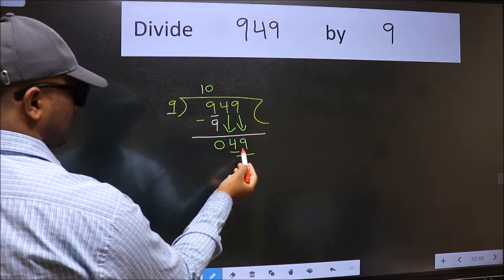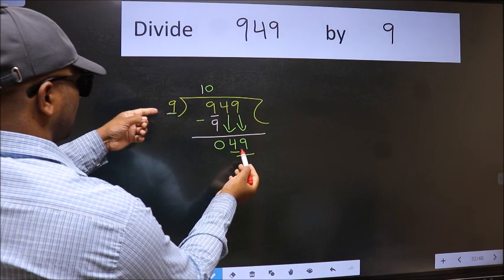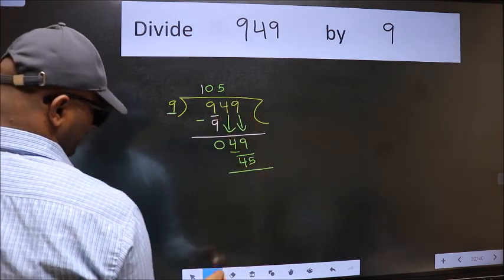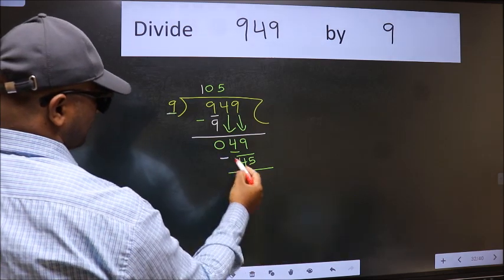Now 49. A number close to 49 in 9 table is 9 5s 45. Now we should subtract. We get 4.